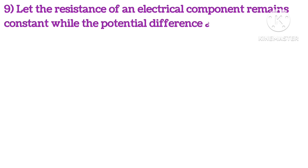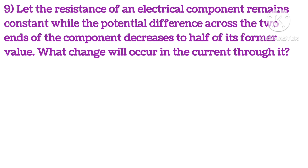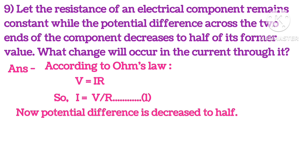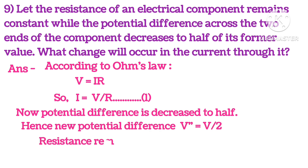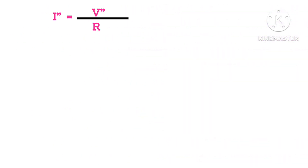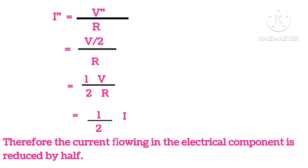Let the resistance of an electric component remain constant while the potential difference across its two ends decreases to half its former value. What change will occur in the current through it? According to Ohm's law, V = IR, so I = V/R. Now, the new potential difference V' = V/2, with resistance remaining constant. The new current I' = V'/R = (V/2)/R = half of I. Therefore, the current flowing through the electrical component is reduced by half.